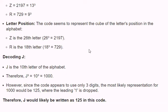Decoding J: J is the 10th letter of the alphabet. Therefore, J cubed equals 10 to the power of 3 equals 1000. However, since the code appears to use only 3 digits, the most likely representation for 1000 would be 125, where the leading 1 is dropped. Therefore, J would likely be written as 125 in this code.